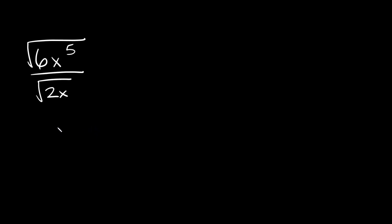What's up, you freaking geniuses! In this video I'm going to teach you how to divide and simplify radicals that have variables and exponents in them. Let's start with this one right here — we have the square root of 6x to the fifth over the square root of 2x.